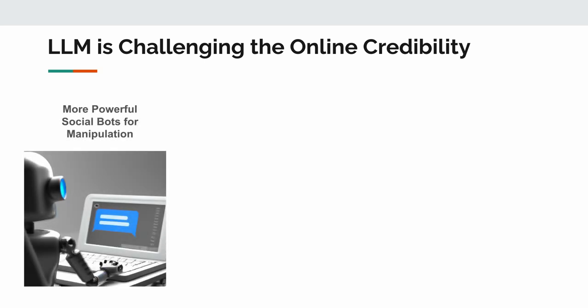The first threat is more powerful social bots for manipulation on social media. Such social bots can easily interact with other users such as humans, and thus are much more difficult to be detected.